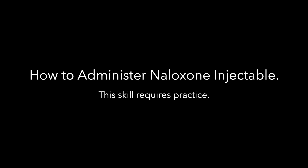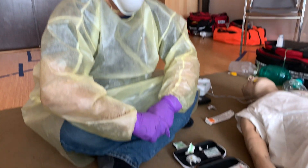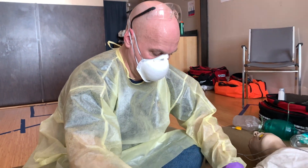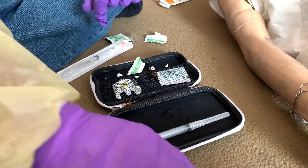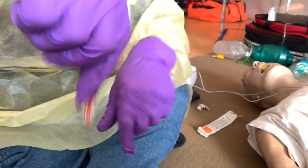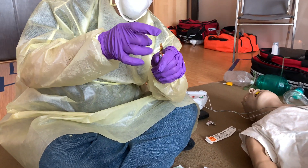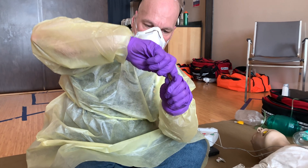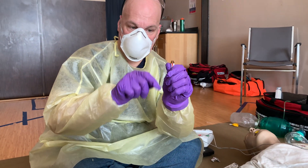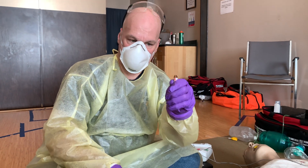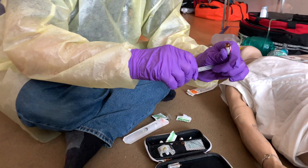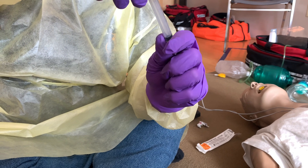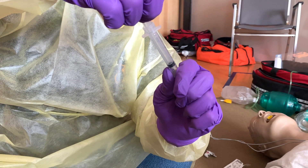How to administer naloxone injectable: first, get your syringe out of the package and ready for use. Next, get your vial of naloxone and spin it around. Use the cap breaker to safely snap off the cap. Then take out the syringe, carefully insert it into the vial, and pull back on the plunger to extract all the naloxone out of the vial. Bubbles usually indicate you are near the end — try to squeeze out most of the air, but don't worry if there are a few bubbles remaining.